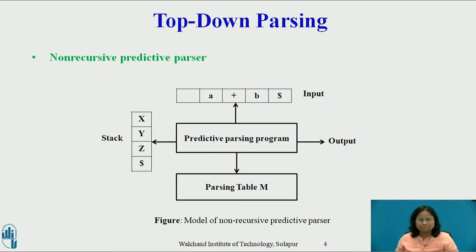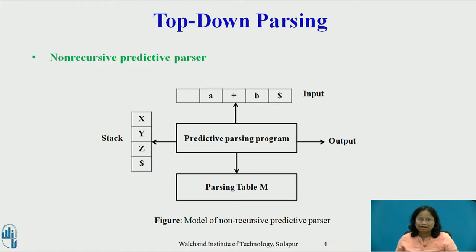Non-recursive predictive parser: It is possible to build a non-recursive predictive parser by maintaining a stack explicitly. The key problem during predictive parsing is determining the production to be applied for a non-terminal. The non-recursive parser looks up the production to be applied in a parsing table. A table-driven predictive parser has an input buffer, a stack, a parsing table, and an output string.